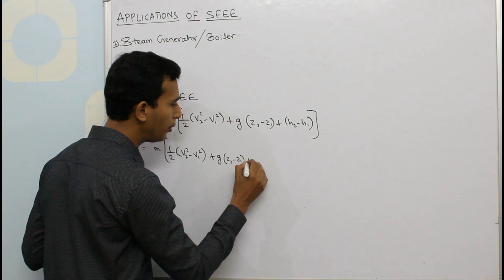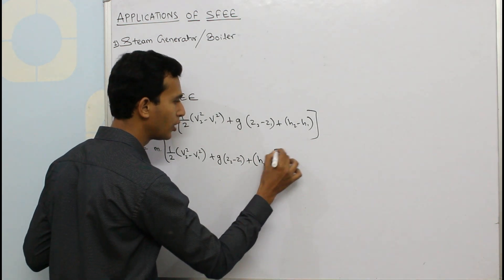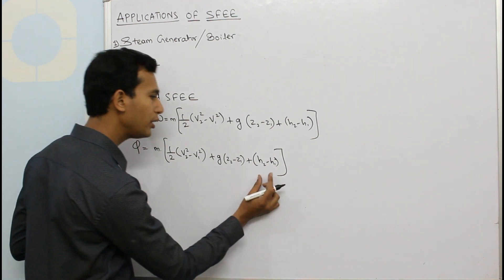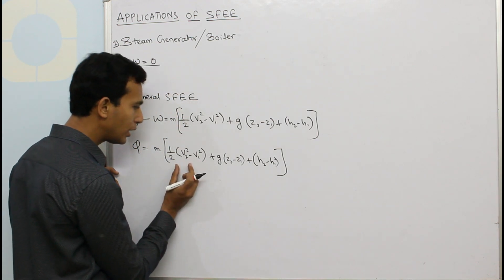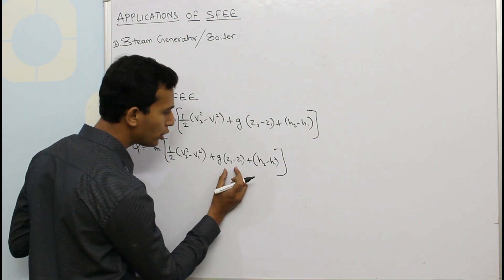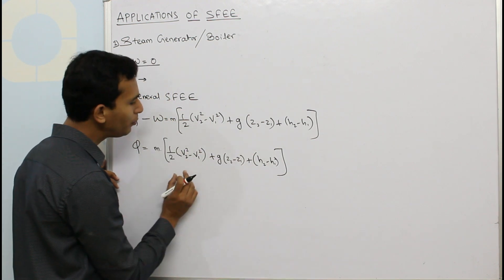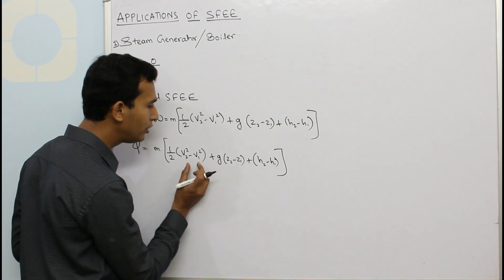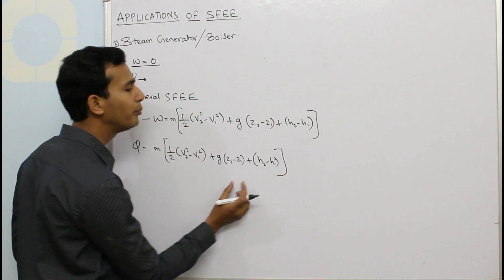So here, as compared to change in enthalpy of the water, the change in kinetic energy and potential energy are negligible. So it doesn't mean they are zero—they are not zero, they are negligible. The value of these two terms is very less as compared to the value of this term.